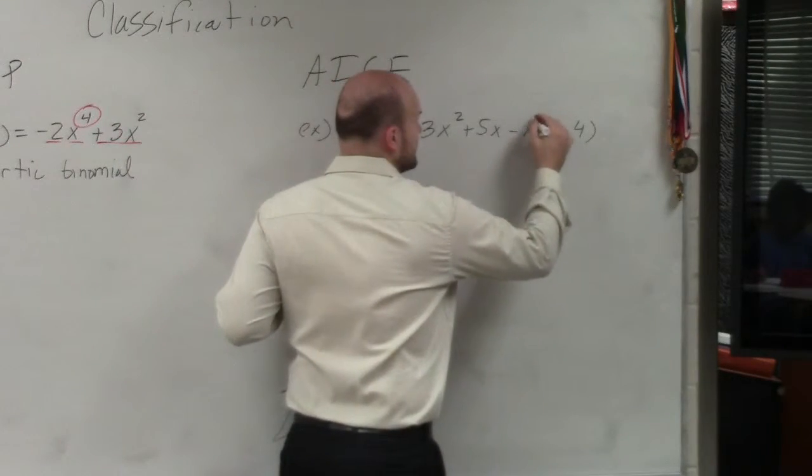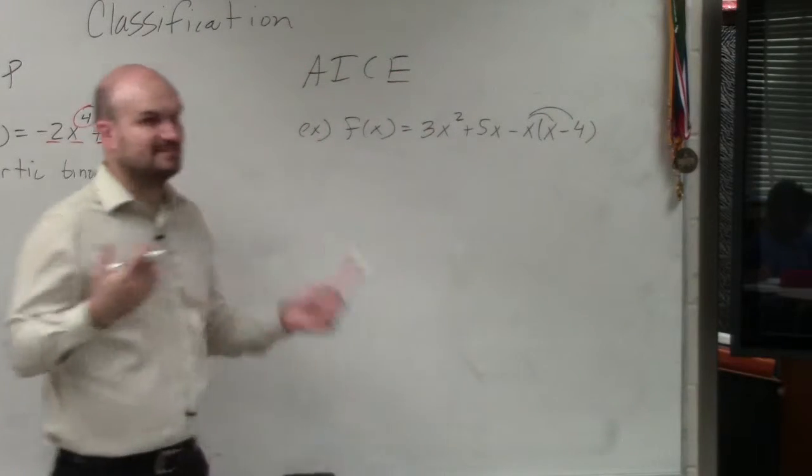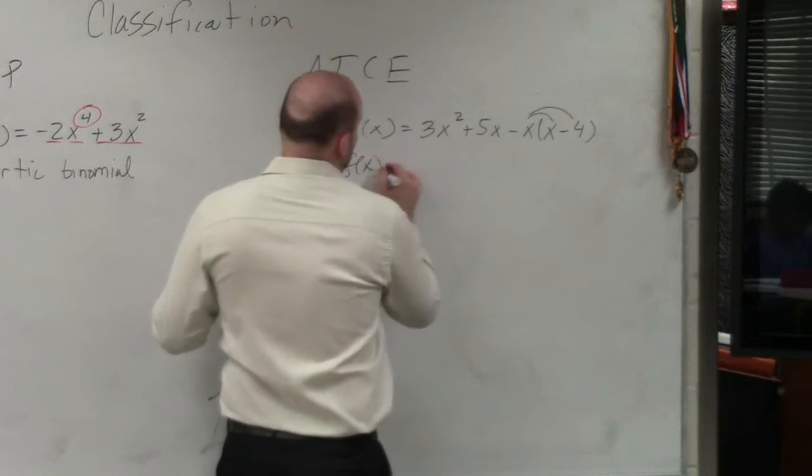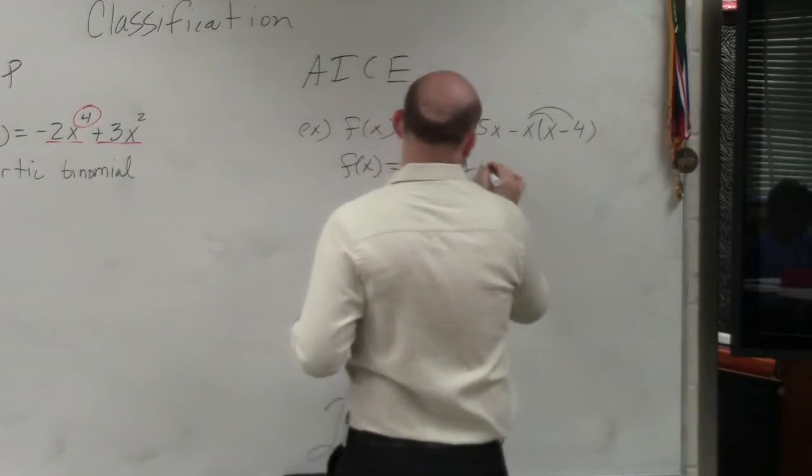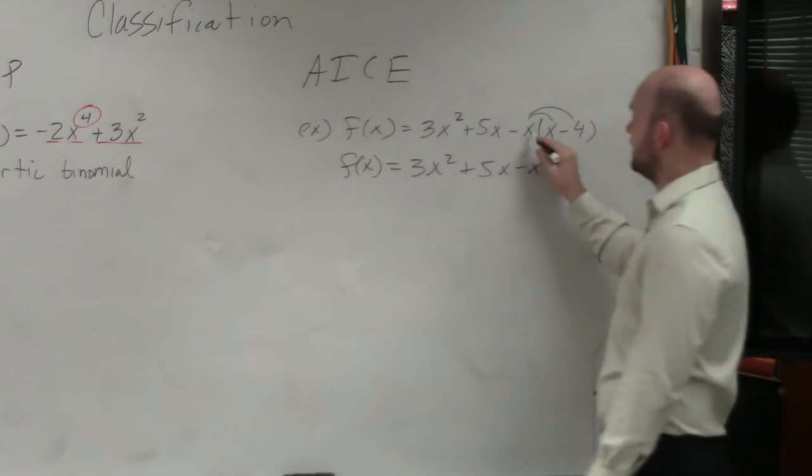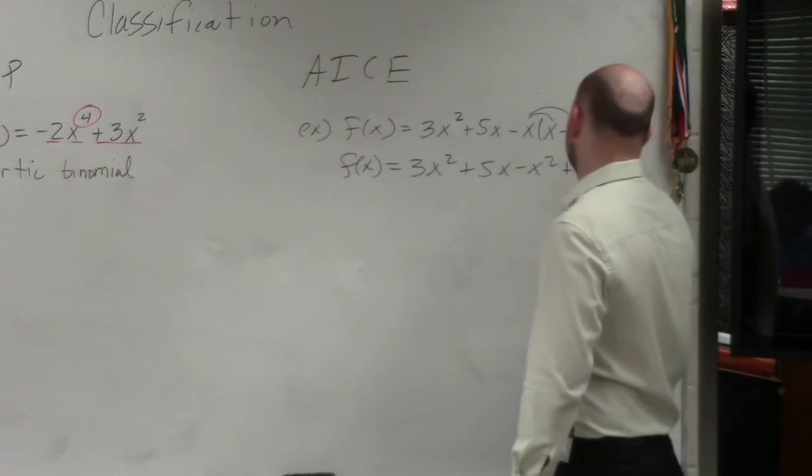So the first thing we're going to want to do, though, is apply a distributive property. If I don't apply a distributive property, I'm not going to be able to put this into standard form. So therefore, I have f of x equals 3x squared plus 5x. Negative x times x is a negative x squared. Negative x times negative 4 is a positive 4x.